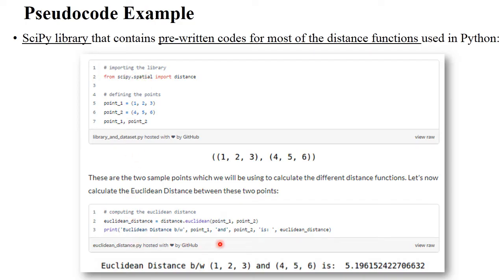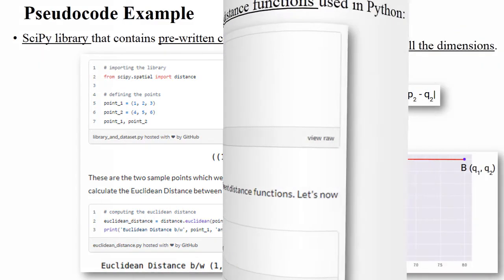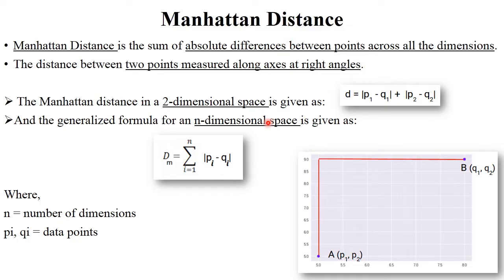The next one is Manhattan distance. Manhattan distance is generally used to measure the distance between right angles or along right-angle axes. It calculates the sum of the absolute differences between points across all dimensions. See here — there is a right angle between dimensions, with point A and point B. The formula is: |P1 minus Q1| plus |P2 minus Q2|. This formula is for two-dimensional space; for n-dimensional space you generalize it using summation.